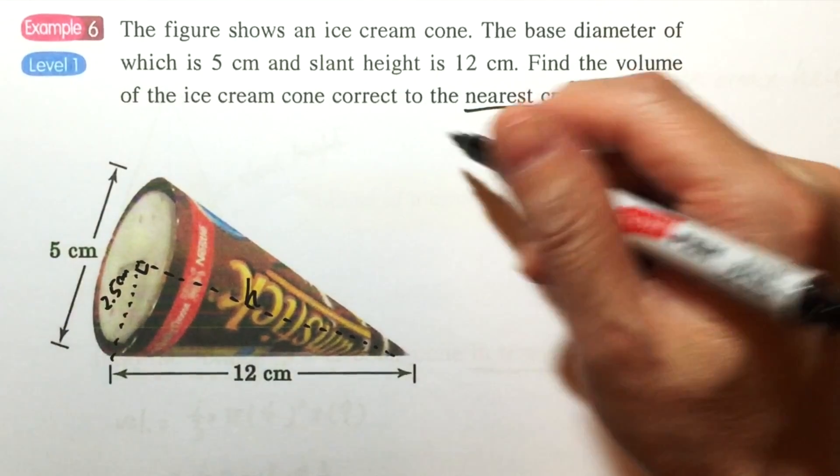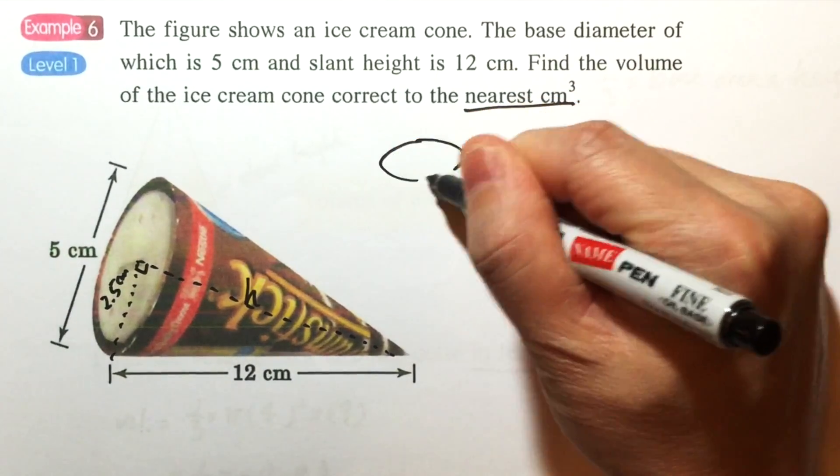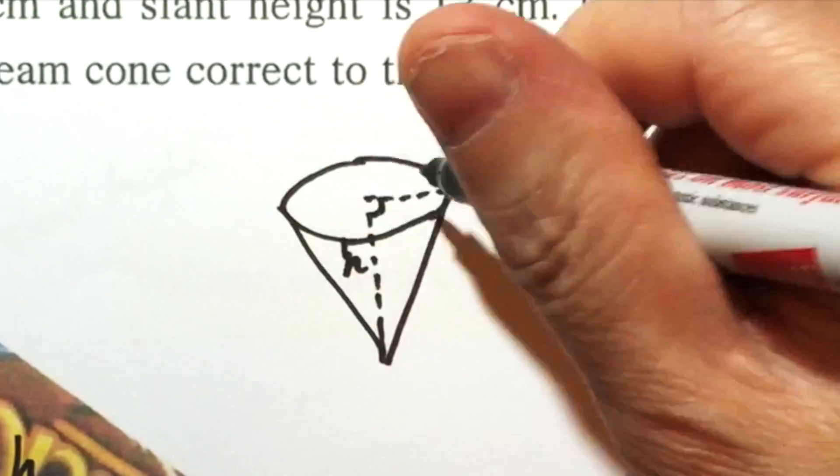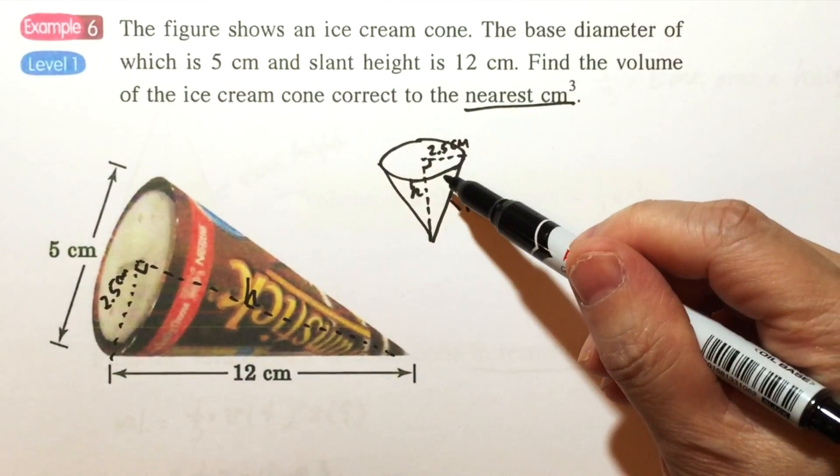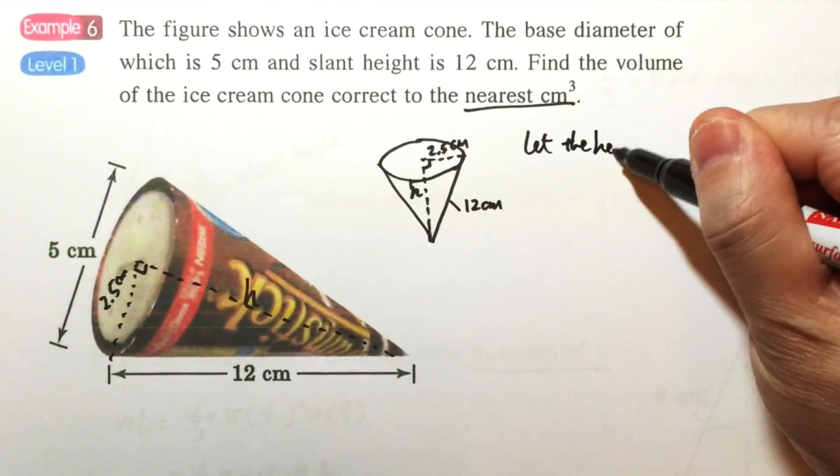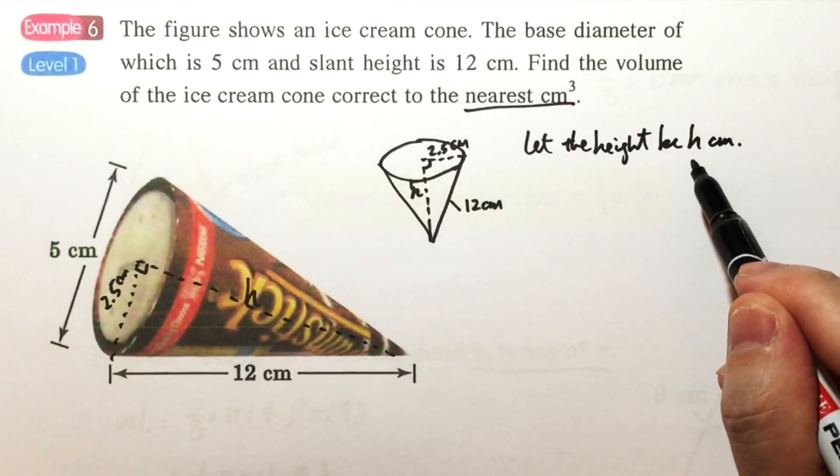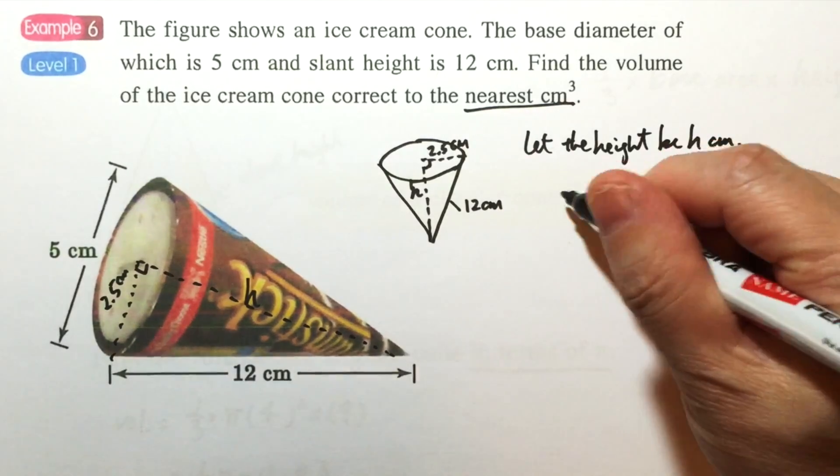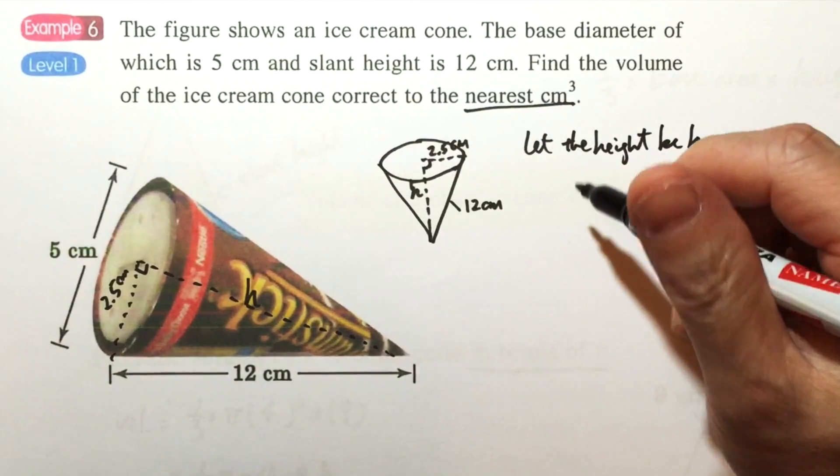Therefore, we can draw another diagram. So this is another picture of the same cone. Let the height of the cone be h cm. Therefore, we can apply the Pythagorean theorem.